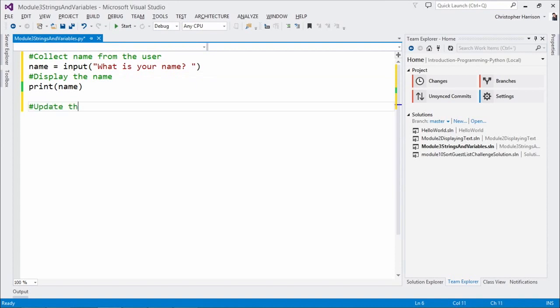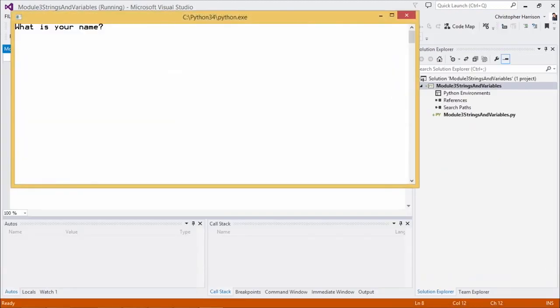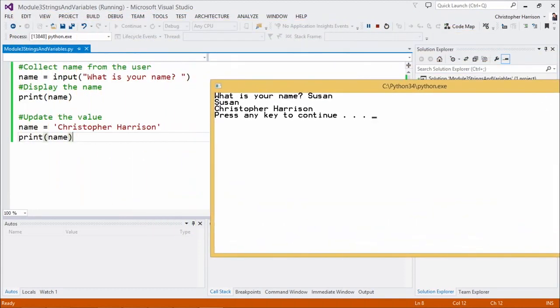And then now, let's go ahead and update the value, and let's go ahead and say name equals, and let's say Christopher Harrison, for example. Picking a name at random. At random. Yes, exactly. And now, let's go in and say, we'll say print name. Beautiful. So now, one more time, I'm going to click start. There we go. So what is your name? I'm going to put in Susan there. And then I'm going to hit enter. And now, what you're going to notice is that it prints out Susan the first time.